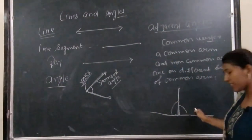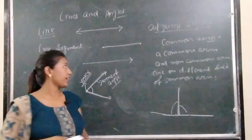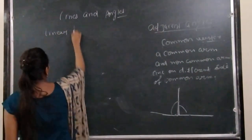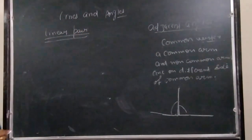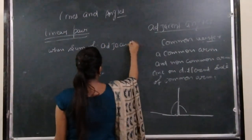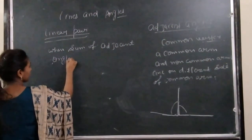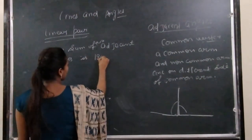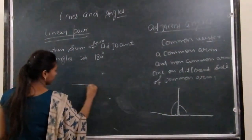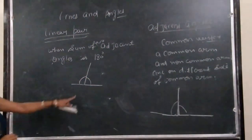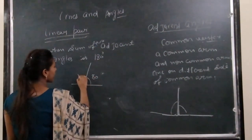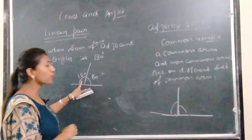Next comes linear pair of angles. When the sum of two adjacent angles is 180 degrees, then the two angles form a linear pair. The angles should first be adjacent and then their sum should be 180 degrees. For example, if one angle is 60 degrees and the other is 120 degrees, then these two angles form a linear pair.